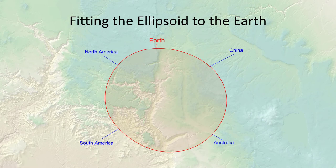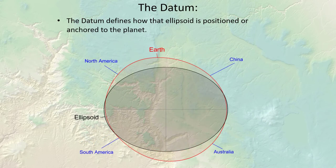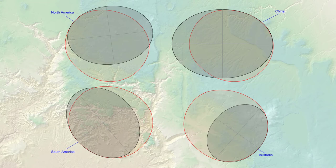The ellipsoid alone is not enough to model the shape of the earth. Because of the earth's non-symmetrical shape, we also need to know how to position the ellipsoid so that it best conforms to the earth. The ellipsoid combined with how it's anchored to the earth together form what we call the datum. The ellipsoid may not conform equally well to all parts of the earth's surface, so we define different datums depending on what part of the earth we want the ellipsoid to conform to.